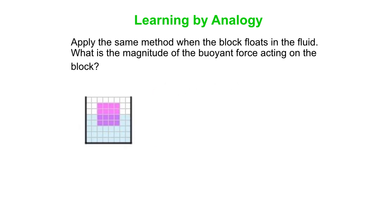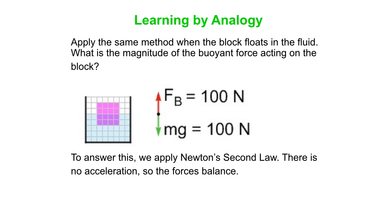How does that apply to our block floating in the fluid? We apply exactly the same logic with the same free body diagram. There's a downward mg force — the earth tries to pull it down — and the fluid prevents the block from falling. So the fluid must exert an equal and opposite upward force. The buoyant force simply has to be 100 newtons, and that comes out of Newton's second law. Later we'll talk about how the buoyant force depends on the density of the fluid, the volume displaced, and g — but you can also get it simply from Newton's second law.